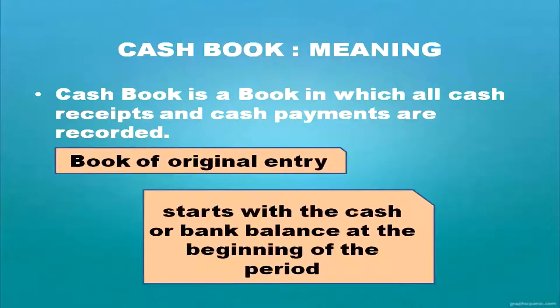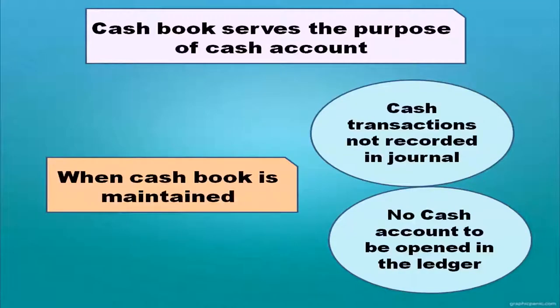Cash book is a book in which all cash receipts and cash payments are recorded. It is a book of original entry. All cash books will start with the cash balance or bank balance in the beginning of the period. If it is a new business, no opening cash balance will be there. When cash book is maintained, cash transactions are not recorded in the journal and no cash account is to be opened in the ledger. Cash book serves the purpose of cash account.